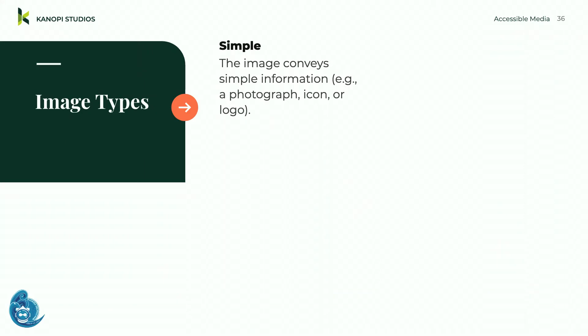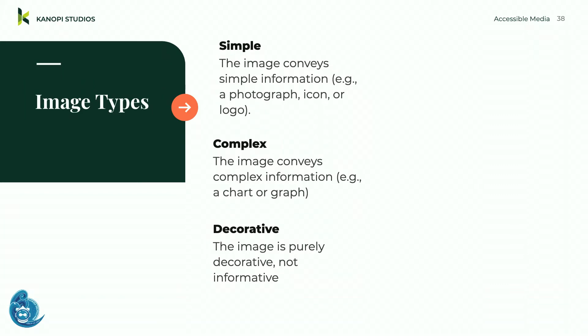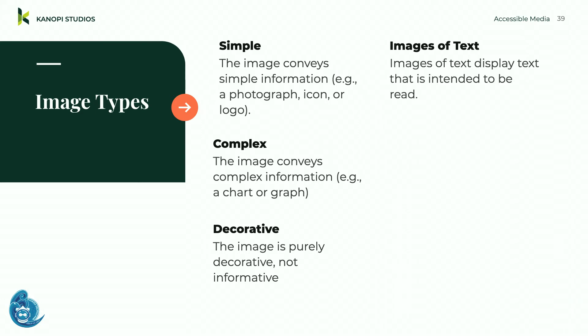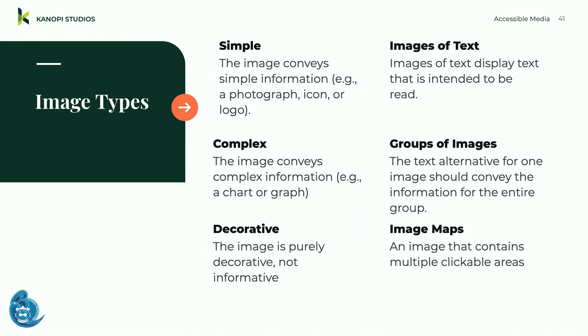Types of images include: simple images that convey simple information like a photograph or icon; complex images like charts, graphs, and diagrams; decorative images that are purely decorative but not informative; images of text where you have a picture of text; groups of images where one image conveys information for the entire group; and image maps containing multiple clickable areas like a park map.